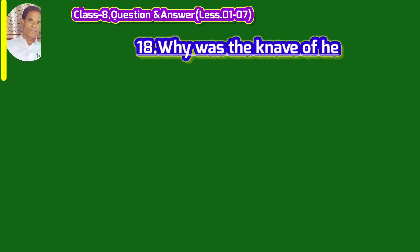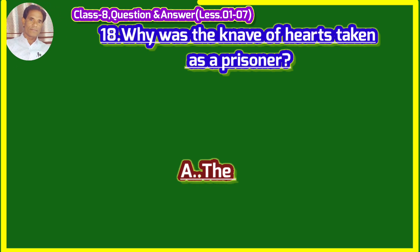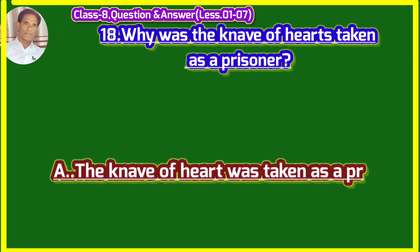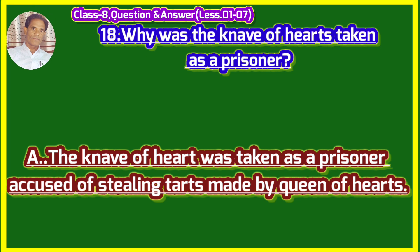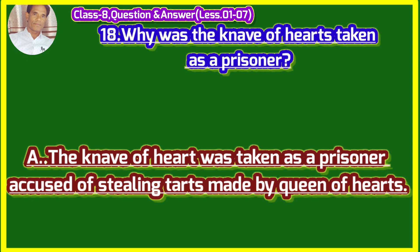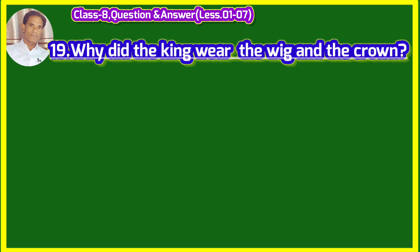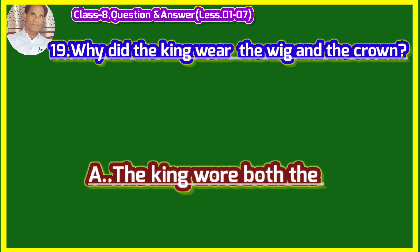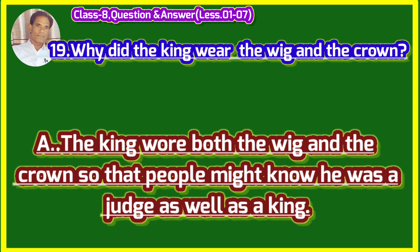Why was the knave of hearts taken as a prisoner? (Ghulam ko bandi kiya banaya gaya tha?) The knave of hearts was taken as a prisoner accused of stealing tarts made by the queen of hearts. Ghulam ko begam dwara banayi gayi mithai chori karne ke arop mein bandi banaya gaya tha. Why did the king wear the wig and the crown? The king wore both the wig and the crown so that people might know he was a judge as well as a king.